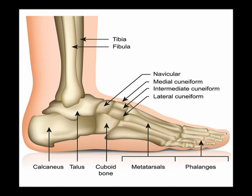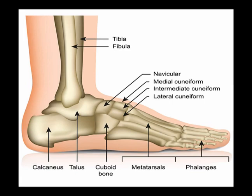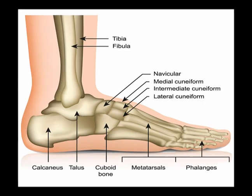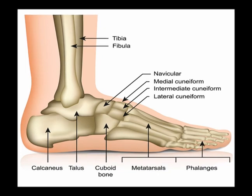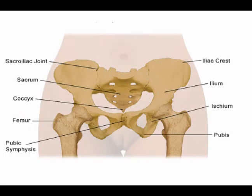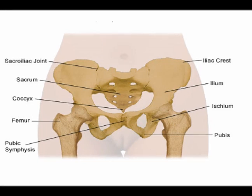The appendicular skeleton of the lower body — a single lower extremity — contains 14 phalanges, which are the bones of the toes. There are proximal, intermediate, and distal phalanges; five metatarsal bones; seven tarsal bones; two lower leg bones, the tibia and the fibula; and the femur, which is the thigh bone.